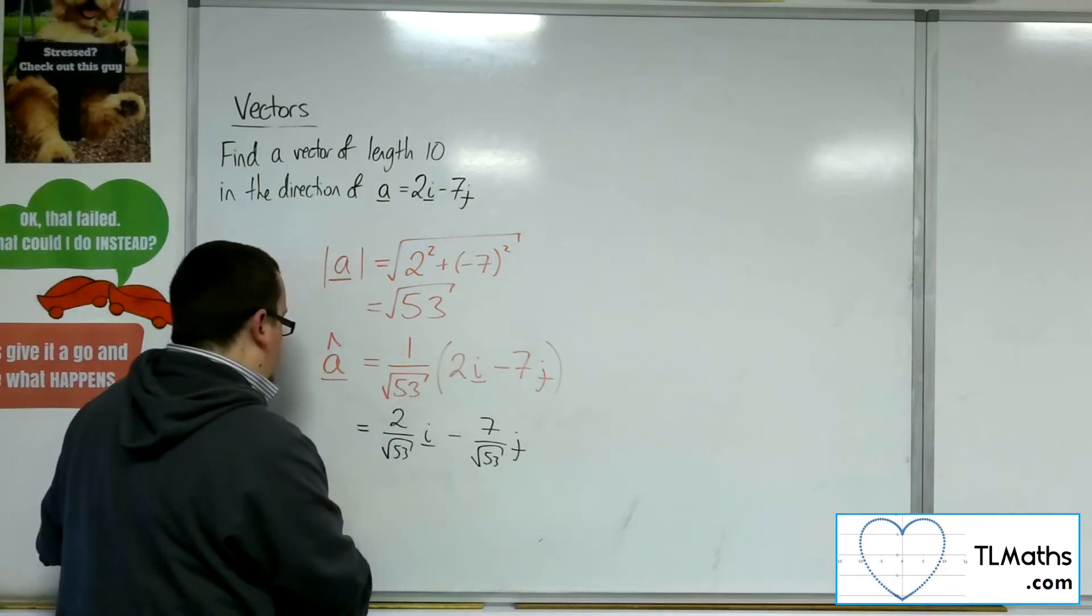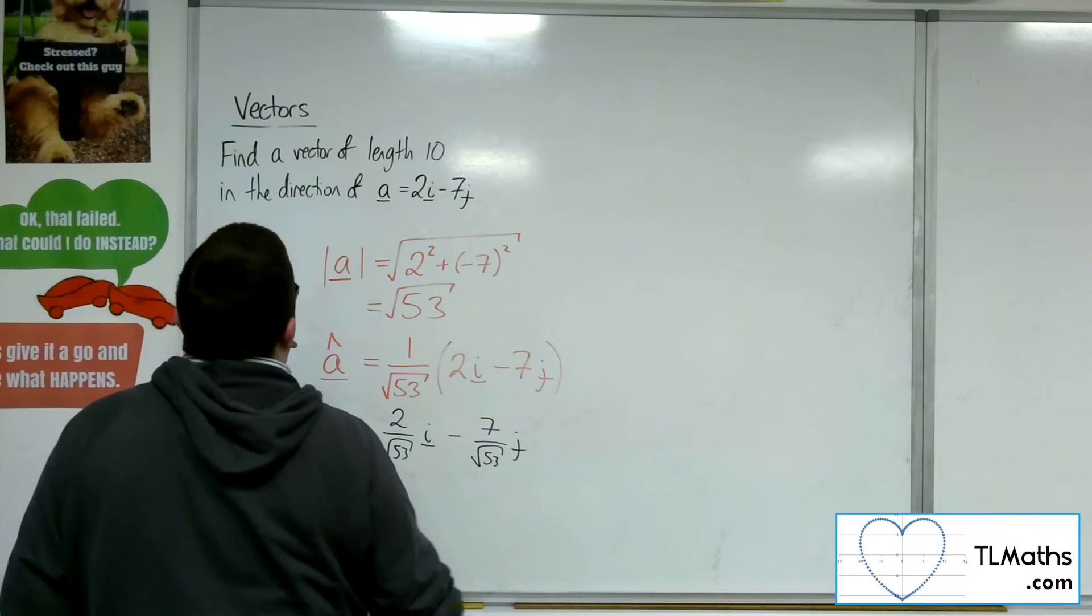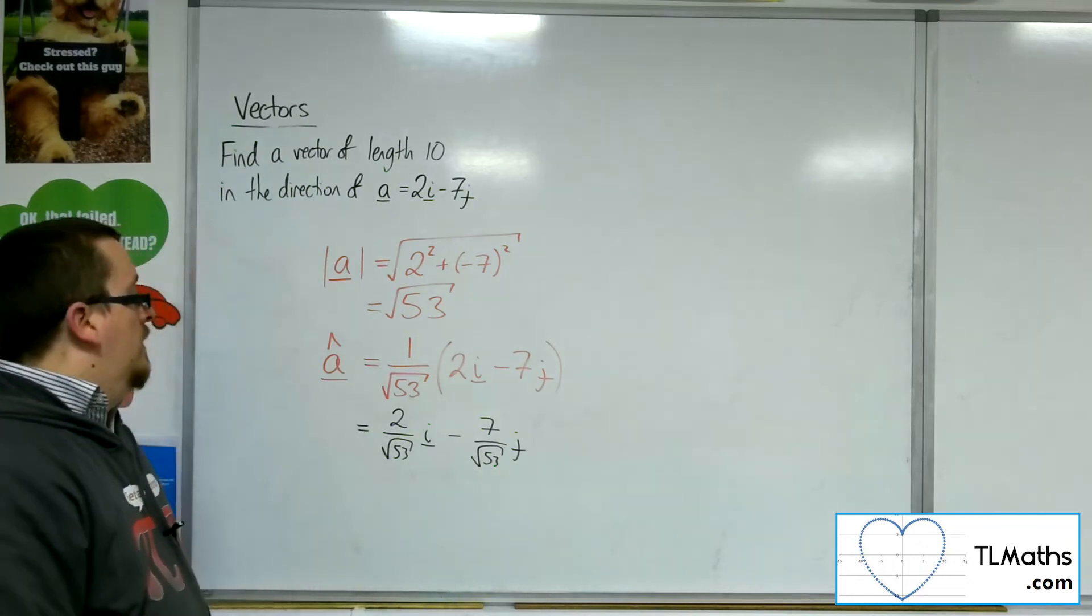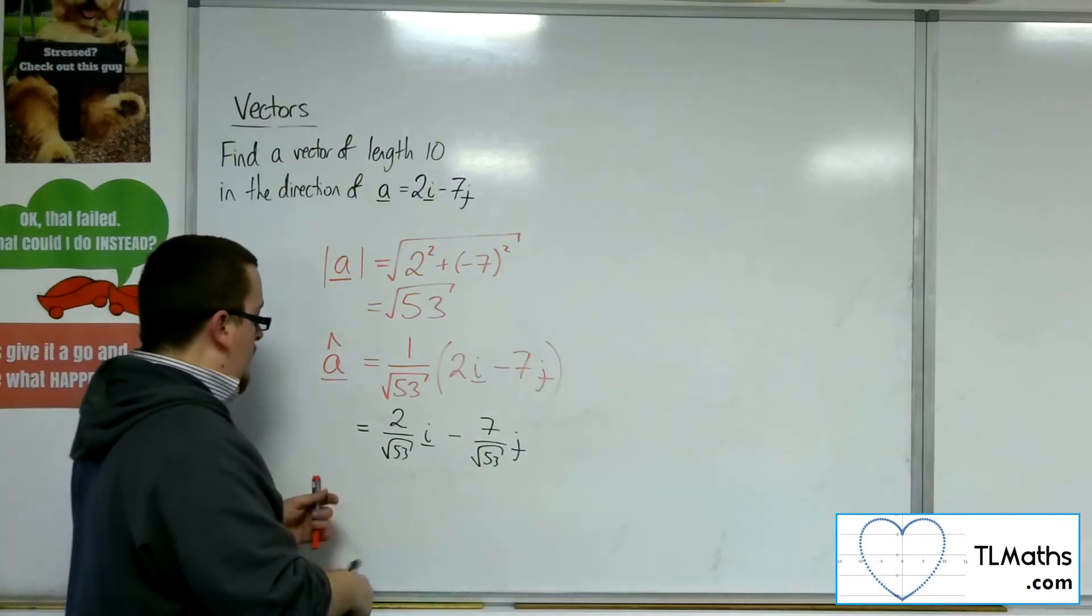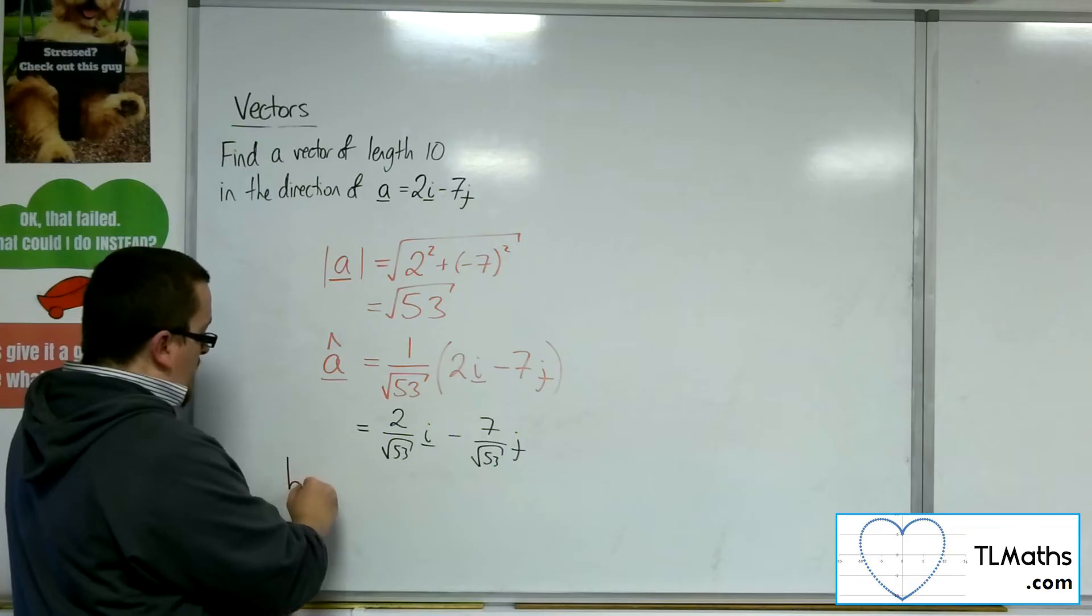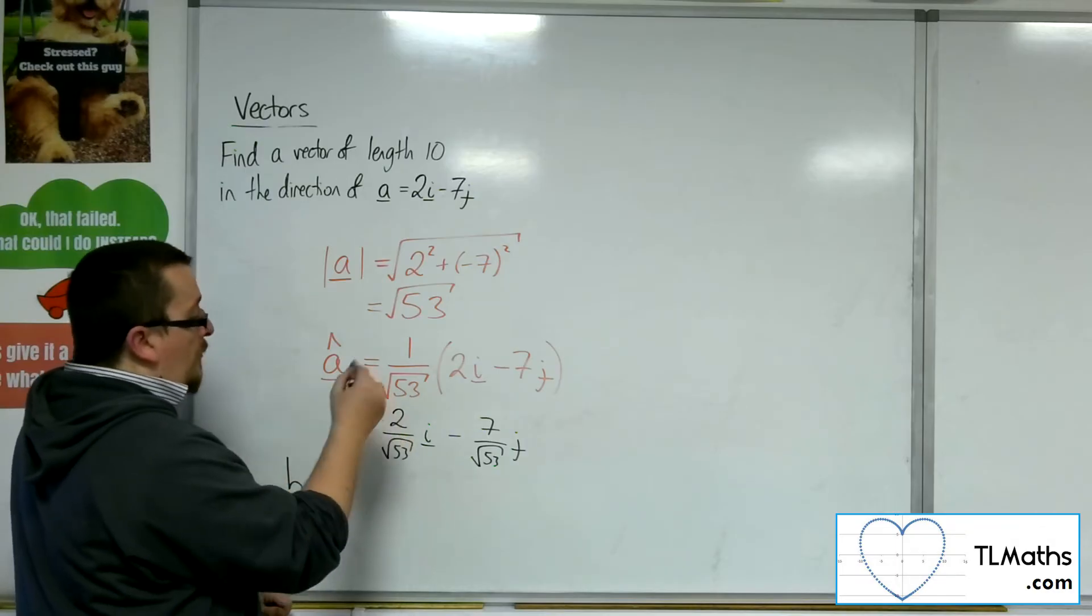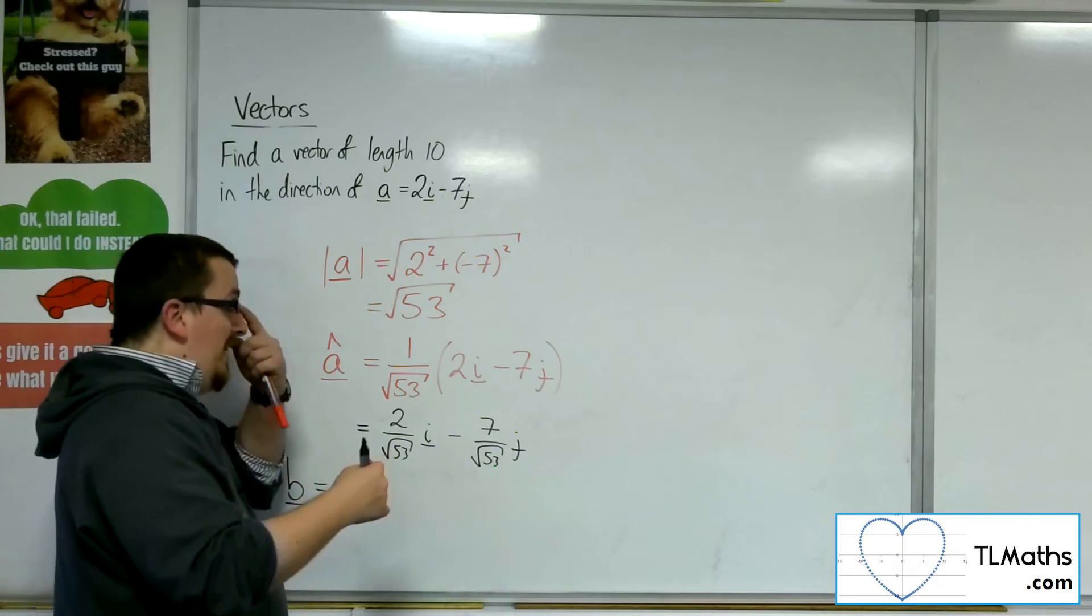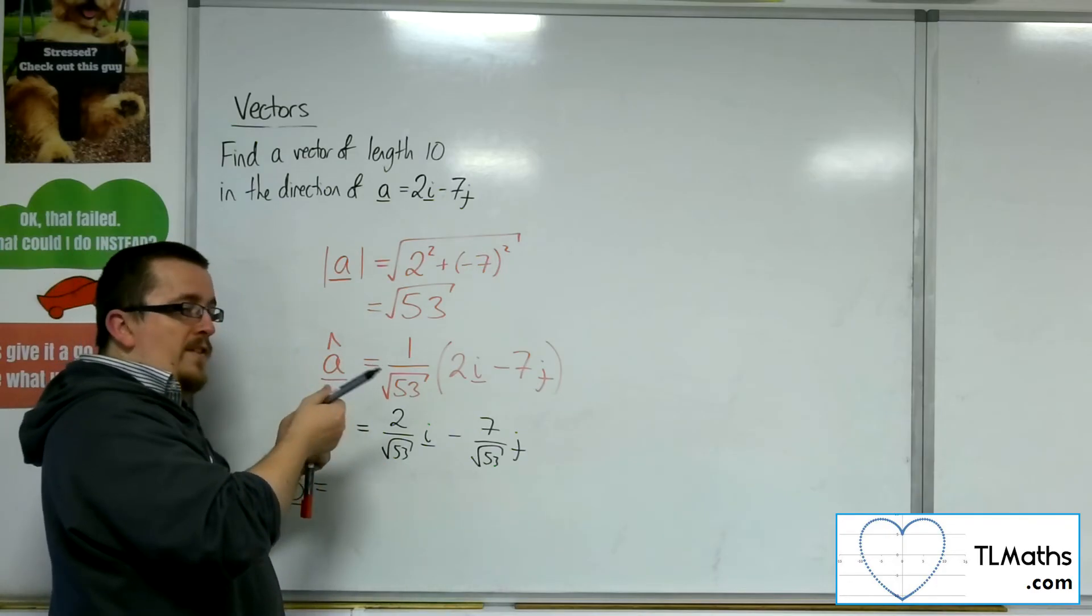However, that doesn't solve my problem, because the question actually asked me to find a vector of length 10. But once I've found the length of the unit vector, the vector that I'm looking for, let's call it vector B, is 10 lots of the unit vector. So the unit vector tells me how to get in the direction of A, but only of unitary length.